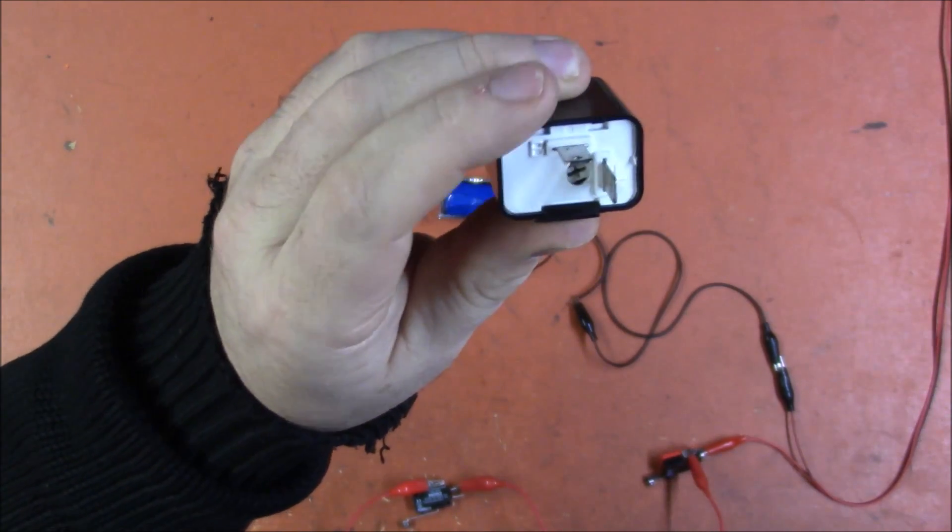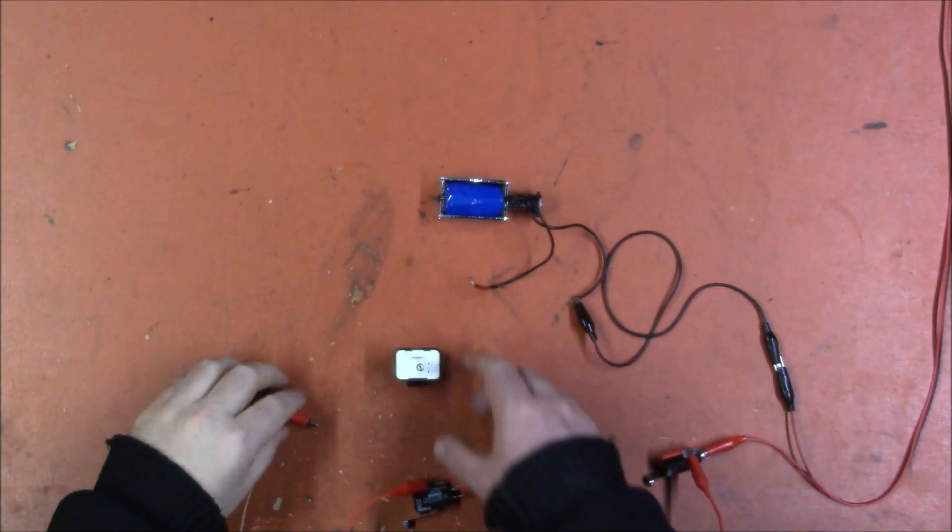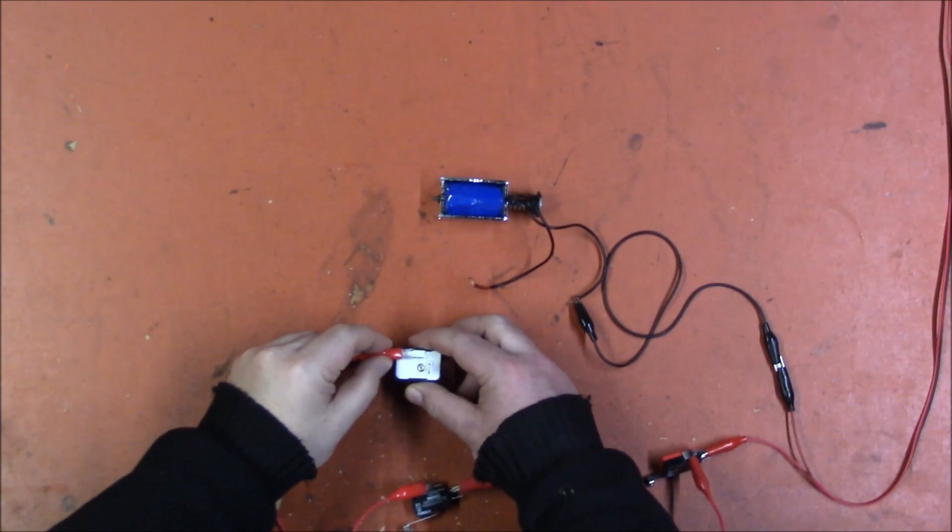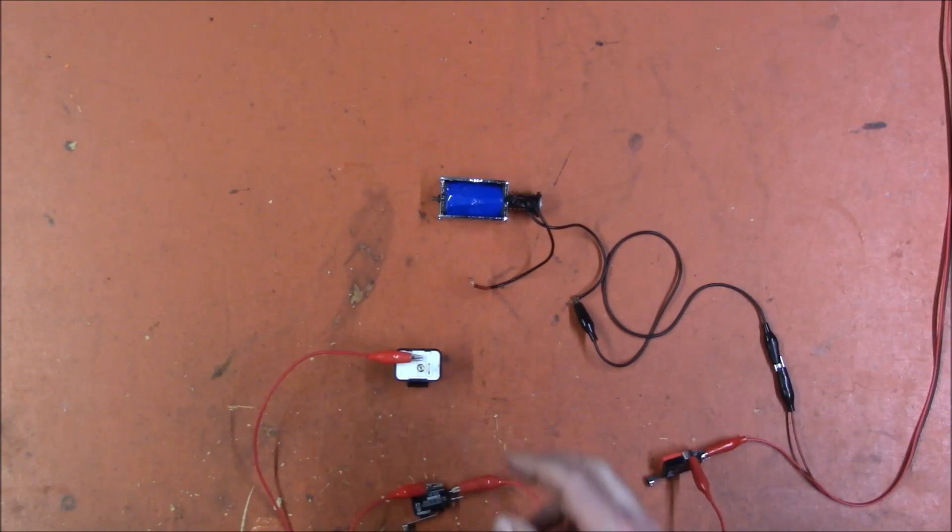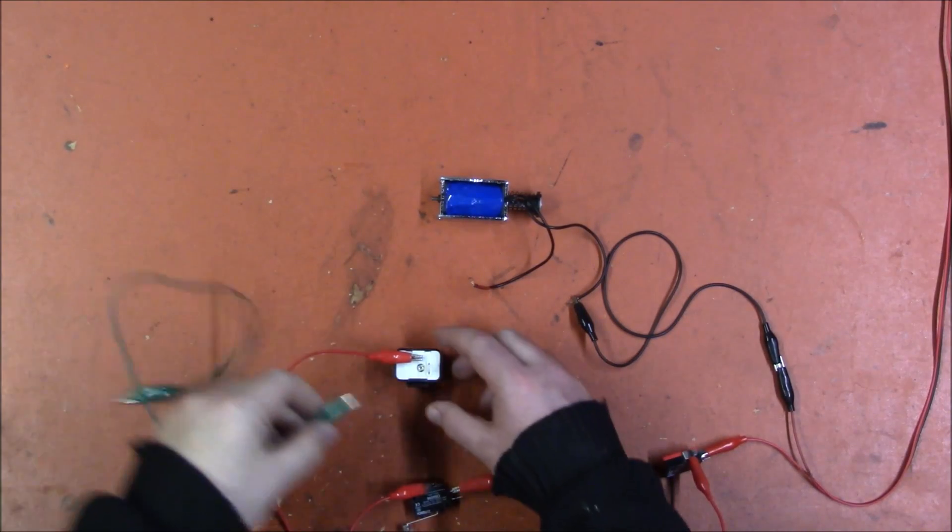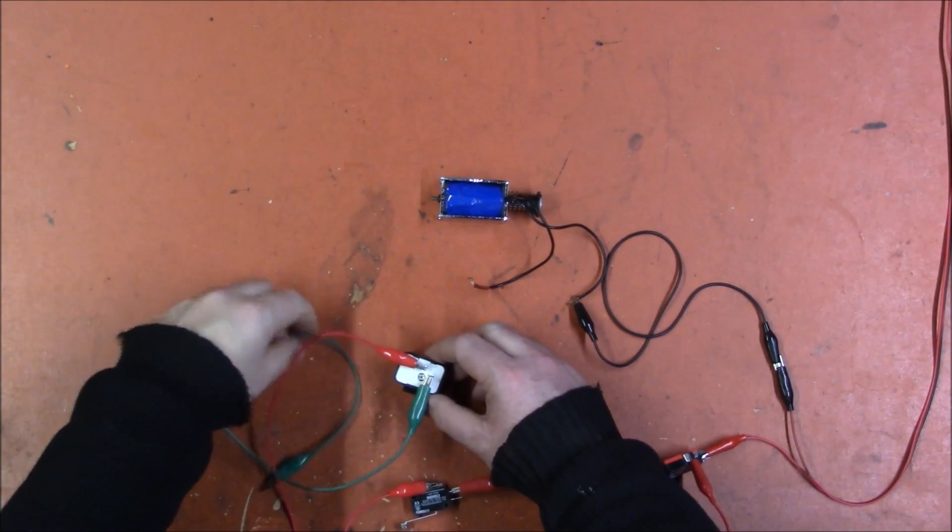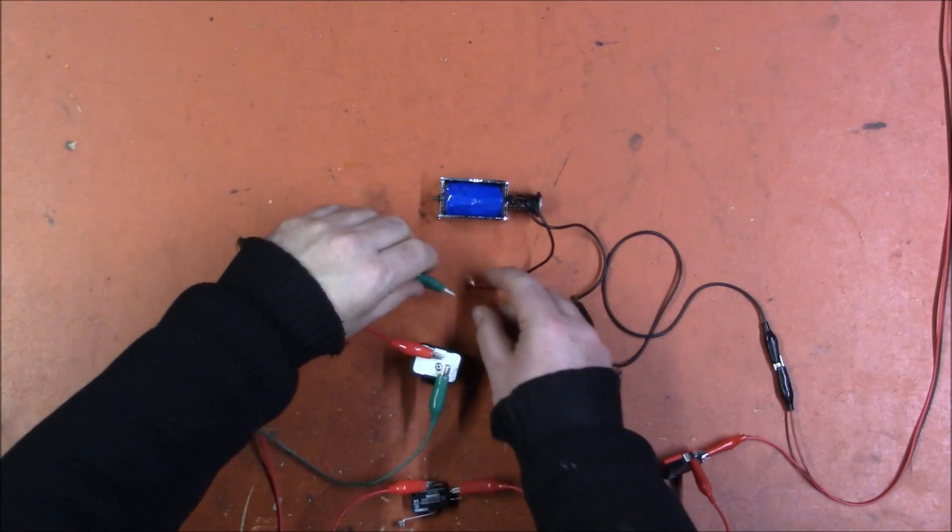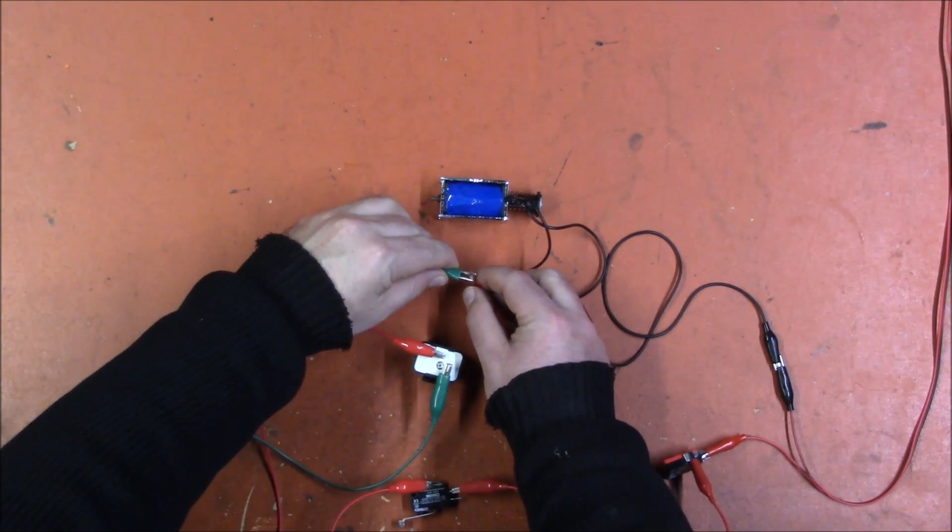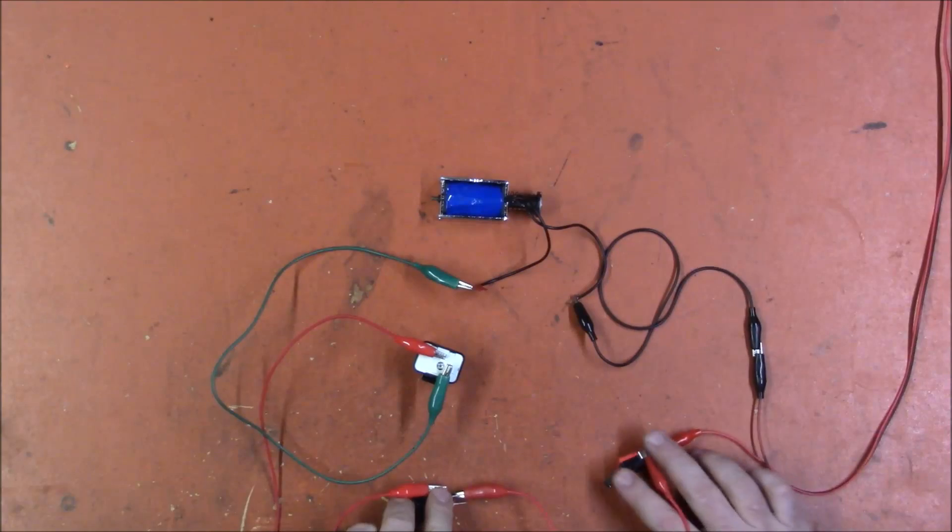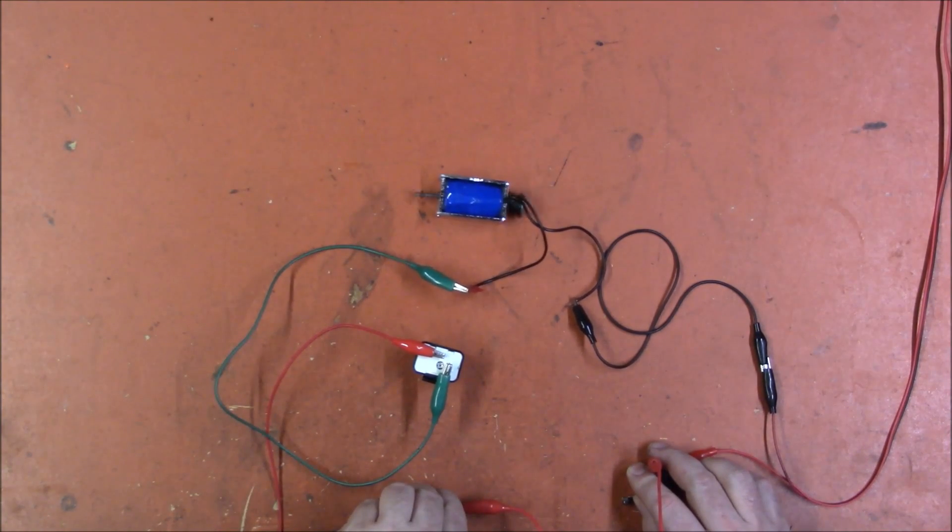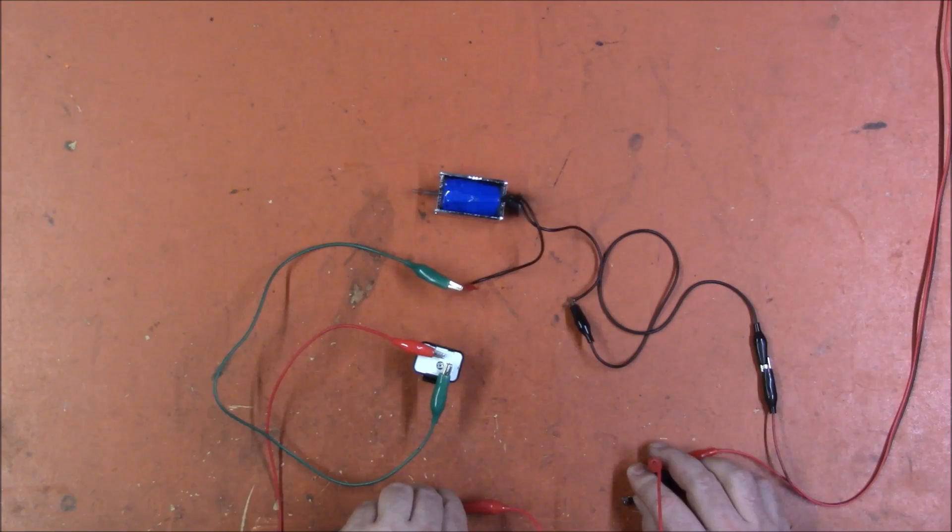So from our trigger switch, we connect to the B, and then from the L, we go to our solenoid. And now when we pull both switches, it oscillates, it fires full auto.